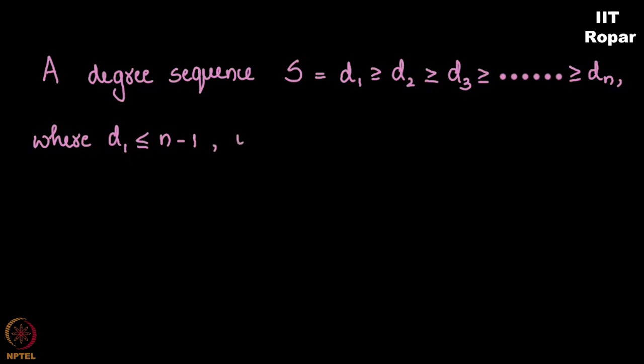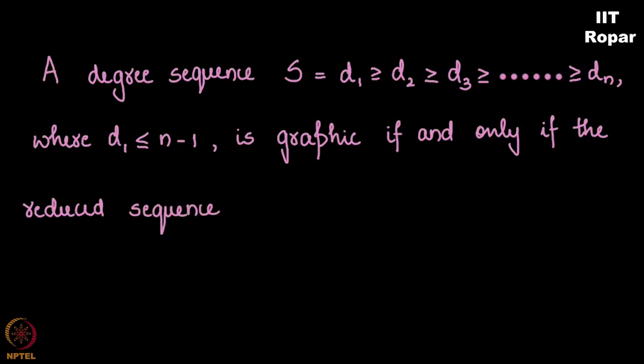This sequence is graphic if and only if the reduced sequence... now don't worry much about the jargons or complicated words used. Since we have already solved the problem and seen how to draw a graph with the sequence, you must be able to visualize it as I state it.